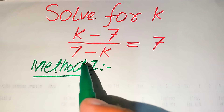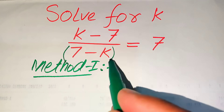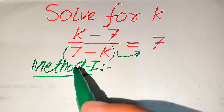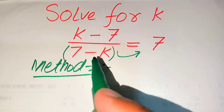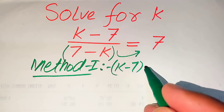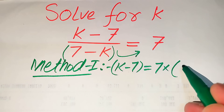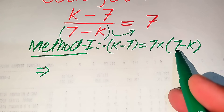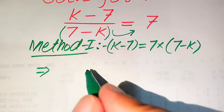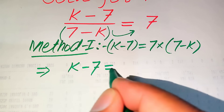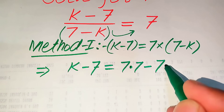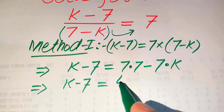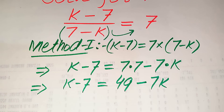In the first method, we move (7 minus k) from the left hand side to the right hand side. Since it was dividing on the left, it becomes multiplied on the right, giving us: k minus 7 equals 7 times (7 minus k). Expanding, 7 multiplies each term separately: k minus 7 equals 7 times 7 minus 7 times k, which is 49 minus 7k.